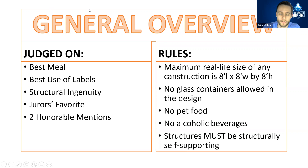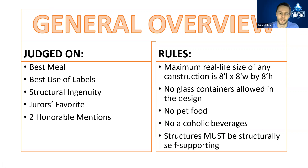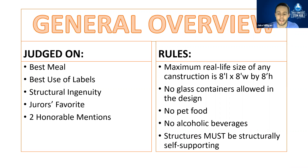A general overview of the judging criteria: best meal — the nutritional value of the cans used in the structure; best use of labels; structural ingenuity. There will be a juror's favorite winner and two honorable mentions. Some rules: the real-life size is limited to 8 feet by 8 feet by 8 feet. No glass containers, no pet food, no alcoholic beverages are allowed, and structures must be structurally self-supporting.